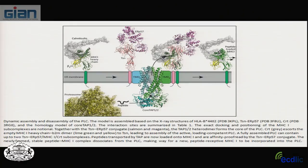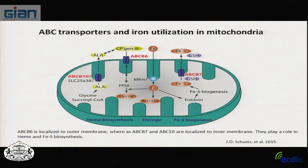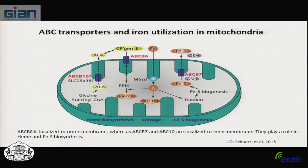Mitochondrial ABC transporters include ABCB6 on the outer mitochondrial membrane, and ABCB7 and ABCB10 on the inner mitochondrial membrane. These are involved in heme and iron-sulfur protein biosynthesis. Defects in any of these affect heme biosynthesis and iron-sulfur cluster assembly, which are critical for electron transport chain function and cellular respiration.